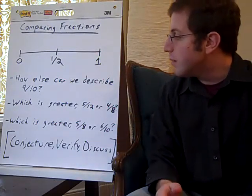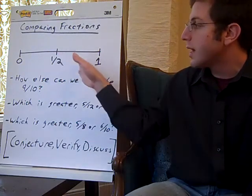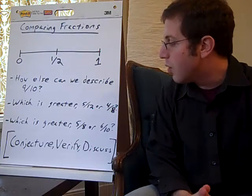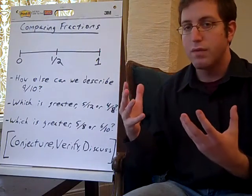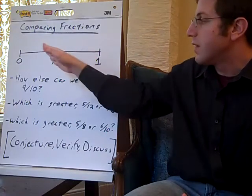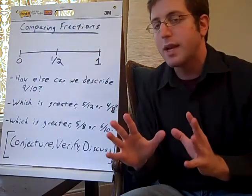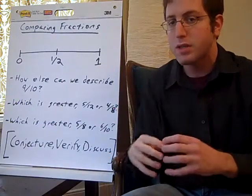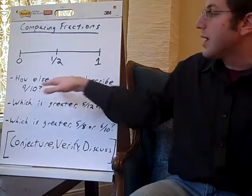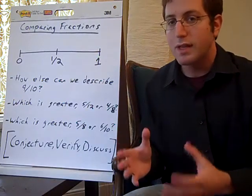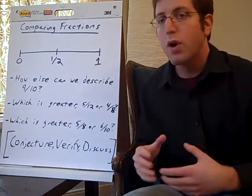Then they moved on to this idea of using the benchmark fractions to describe fractions in terms of their, where are they relative to zero, one-half, or one. And this wasn't comparison yet. This was still building up to comparison. This is just, if you take the number nine-tenths and you think about it on a number line, if you think about it relative to a half and one and zero, where is it?